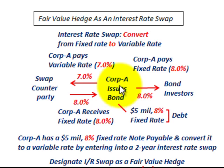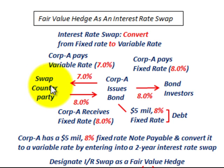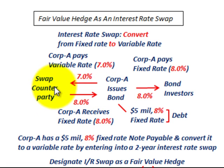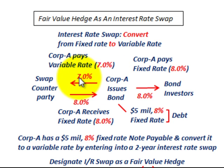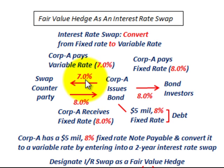At the same time, Corporation A enters into an interest rate swap contract with another party — the swap counterparty. The swap counterparty agrees to pay Corporation A the fixed interest rate of 8% on those bonds. In return, Corporation A pays the variable interest rate to the swap counterparty. This effectively converts the fixed interest rate on the bonds to a variable interest rate.